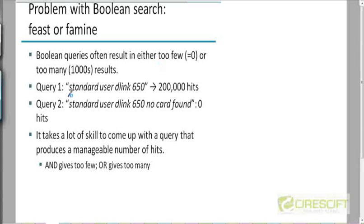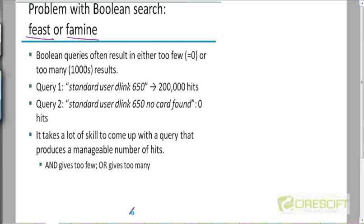For example, here's a query: 'standard user D-link 650'. This was, at some point a few years ago, yielding about 200,000 hits on a typical search engine. Whereas if you add the phrase 'no card found', it yields zero hits. So the problem with Boolean search here is that you either get a feast of results or a famine of results. If your query is too short, you may get too many results to handle. If your query is too long, you may get too few results. It takes a lot of skill to come up with a precise Boolean query that returns a manageable number of hits. Short queries in general tend to give too many results and long conjunctive queries tend to give few results.